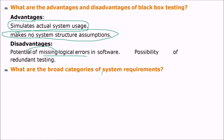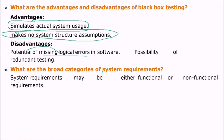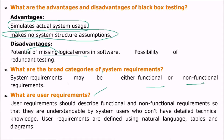What are the broad categories of system requirements? System requirements fall into two broad categories: functional and non-functional requirements. What are user requirements? User requirements should describe functional and non-functional requirements in a way understandable by users without detailed technical knowledge. They are defined using natural languages, tables, and diagrams.